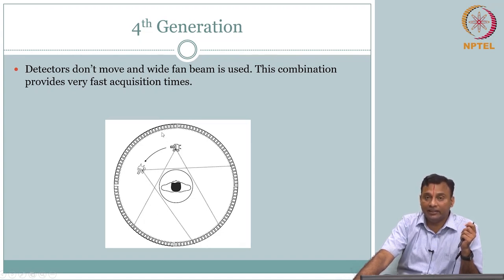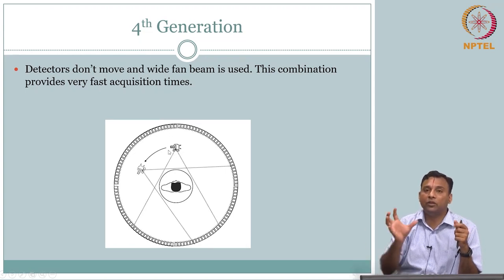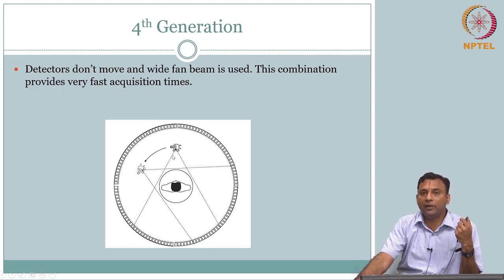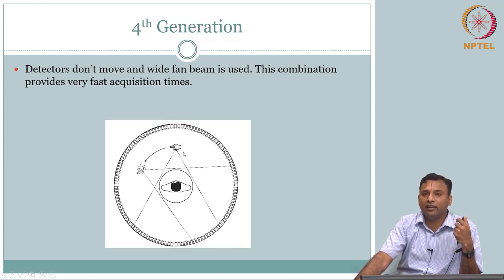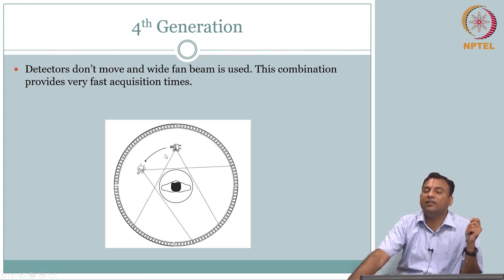The challenge is, unlike the detector where advancement started to happen, the X-ray tube has been there from before — even for projection radiography we use the same X-ray tube. This is the active part: it is heating, it is bulky, you have high voltage, so this is cumbersome. You cannot have multiple X-ray tubes and try to rotate them. They did not work on having multiple sources because of the bulkiness of the X-ray tube — it is a very critical component, unlike the detector where evolution was happening in parallel due to semiconductor advances.